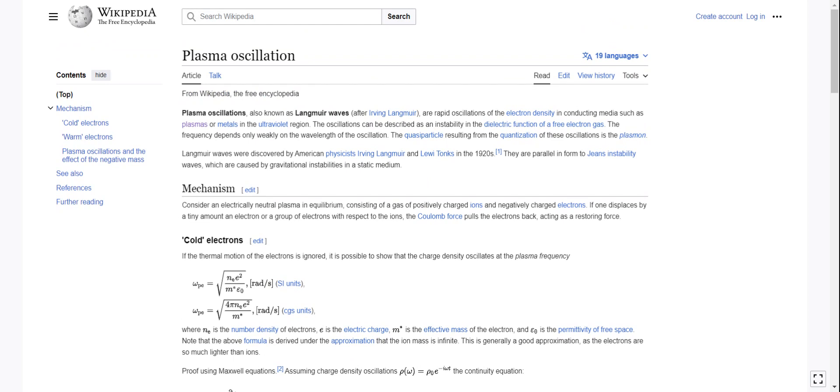Plasma oscillations, also known as Langmuir waves after Irving Langmuir, are rapid oscillations of the electron density in conducting media such as plasmas or metals in the ultraviolet region. The oscillations can be described as an instability in the dielectric function of a free electron gas. The frequency depends only weakly on the wavelength of the oscillation.